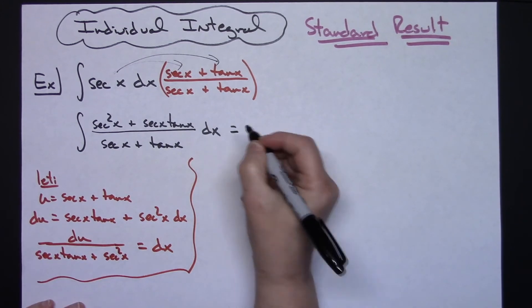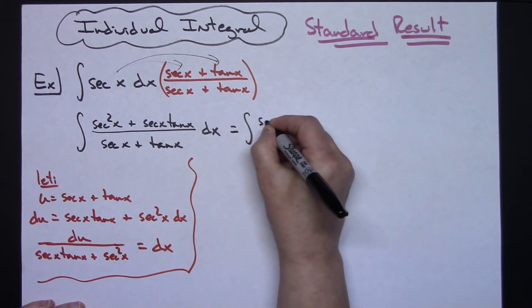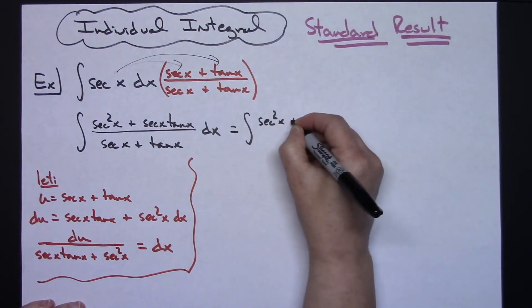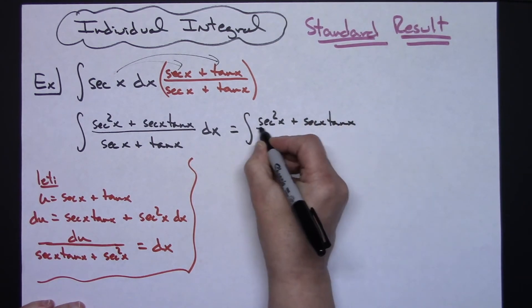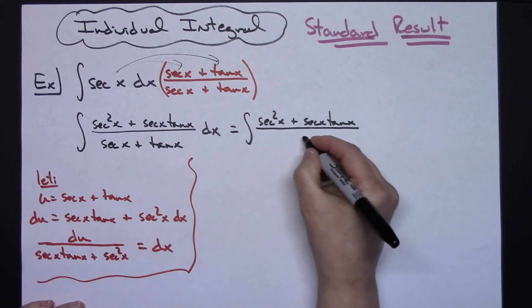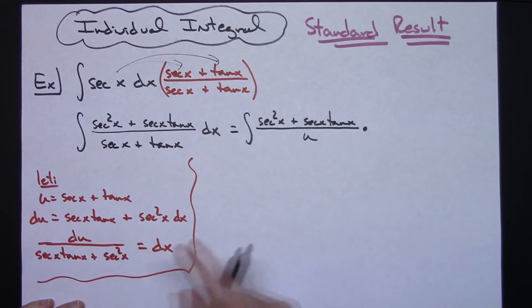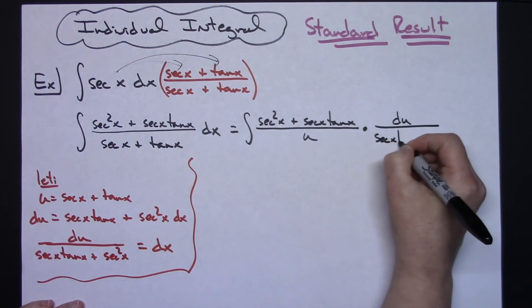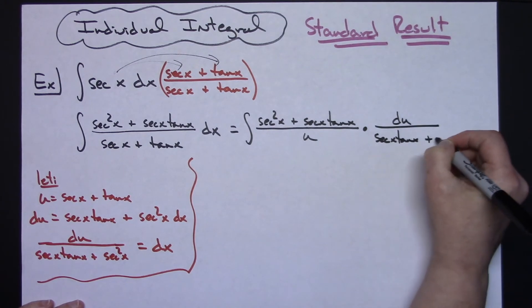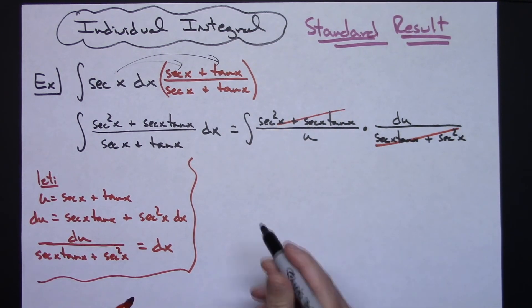So then we can come back up here and we can make some substitutions. So we'll have the integral of secant squared x plus secant x tangent x, and then all over, this will be our u. So we'll replace that with our u. We'll replace dx with our du over secant x tangent x plus secant squared x. And then that's going to allow us very nicely to cross out those two things there,